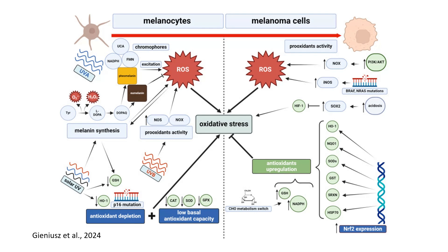Melanoma cells also undergo a metabolic shift, utilizing carbohydrates to produce NADPH, which supports the enhanced antioxidant capacity. This diagram illustrates the evolution of redox balance from melanocytes to melanoma cells. While melanocytes are vulnerable to oxidative stress due to lower antioxidant capacity, melanoma cells adapt by enhancing their antioxidant systems, enabling survival and progression. Understanding these redox mechanisms offers potential therapeutic targets for melanoma treatment.